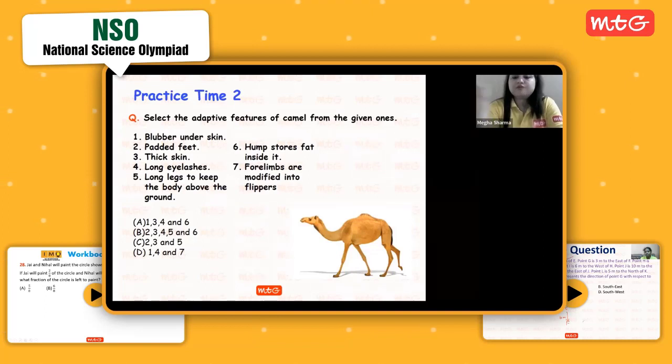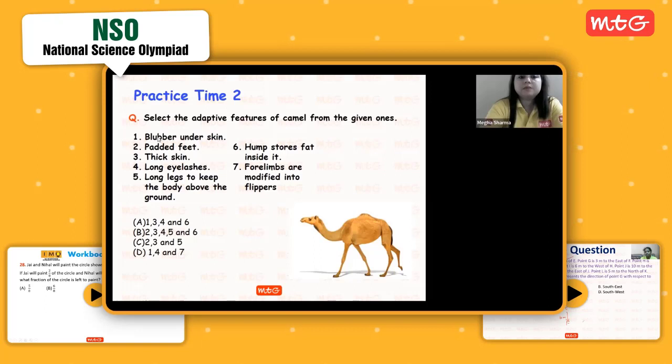What are the correct features? Blubber under the skin is a fat layer seen in polar animals like penguin and polar bear. It will not fit for camel because it is already very hot in its habitat, so it will not require blubber. Padded feet is true because it has to walk on sand, which is very difficult.